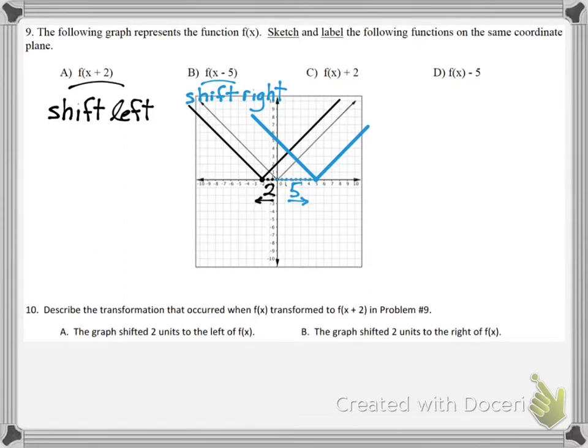Part C: F of x plus 2. That is a shift up of 2. So just go up 2 units. And you will notice right here that two of the graphs now occupy the same line. That's fine. That happens from time to time. Just draw right over it.